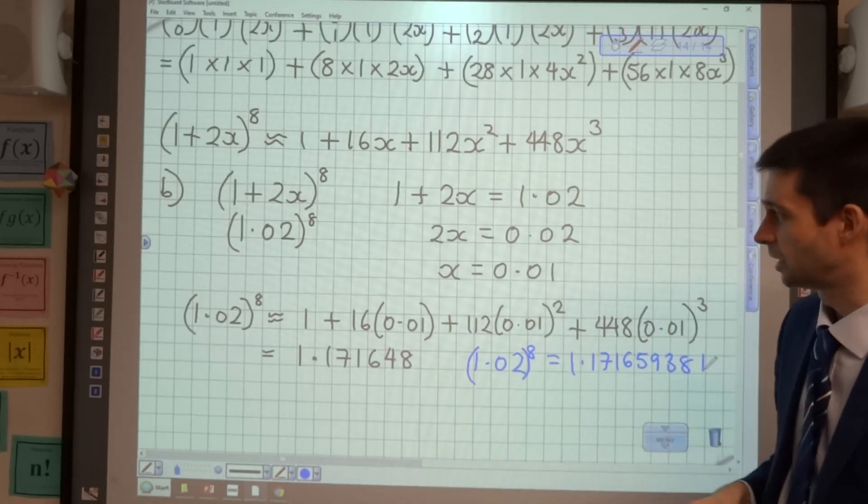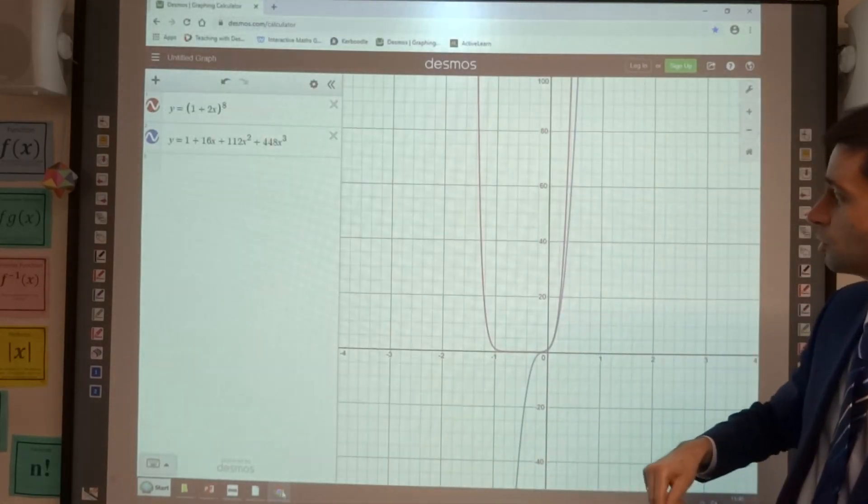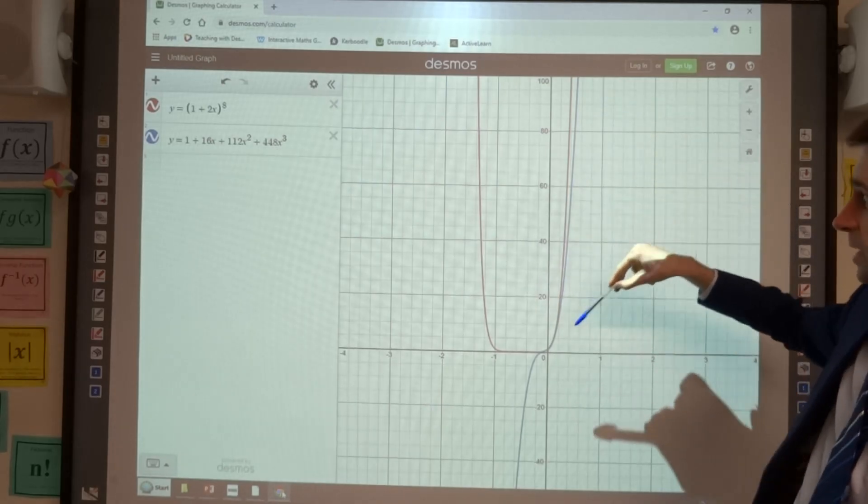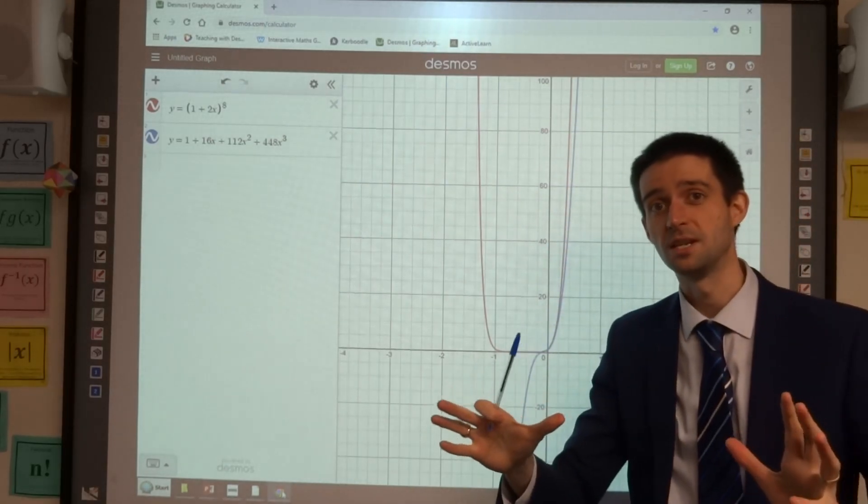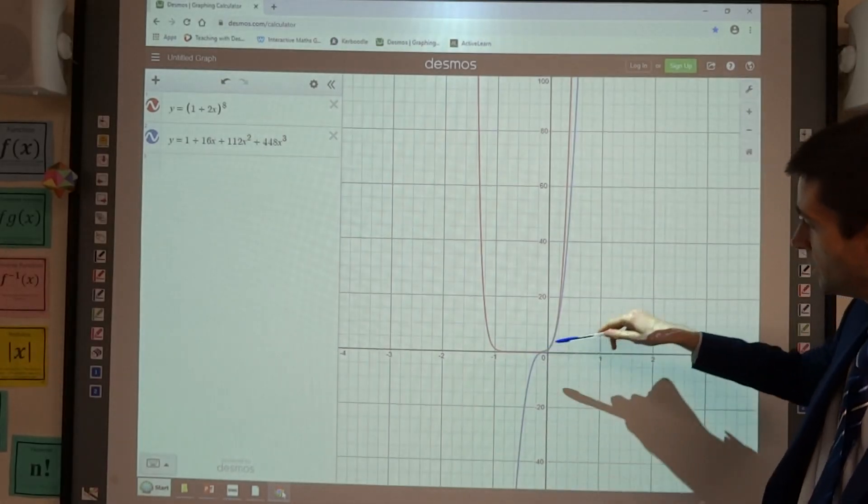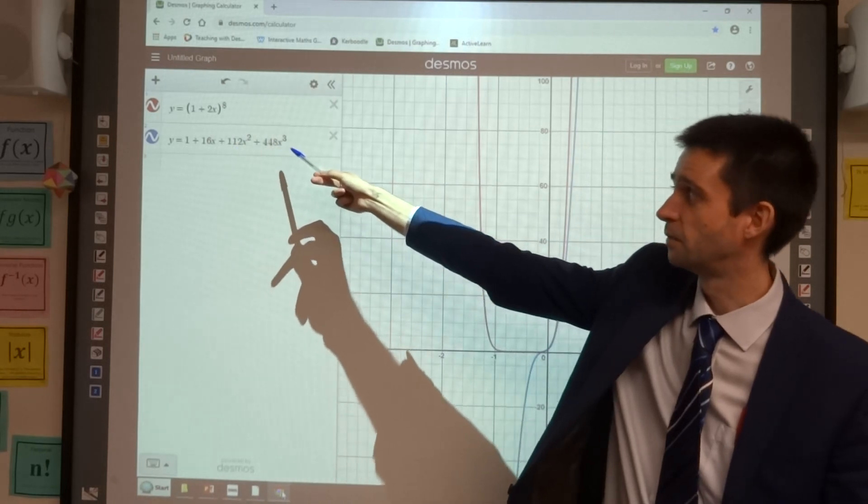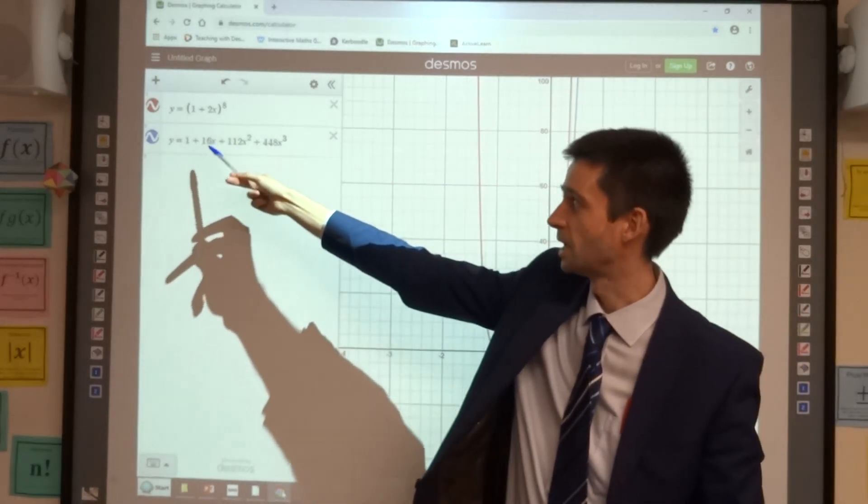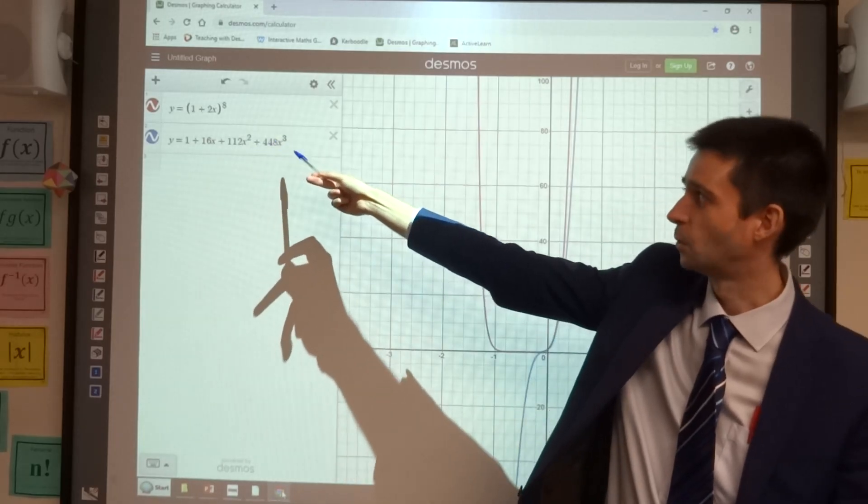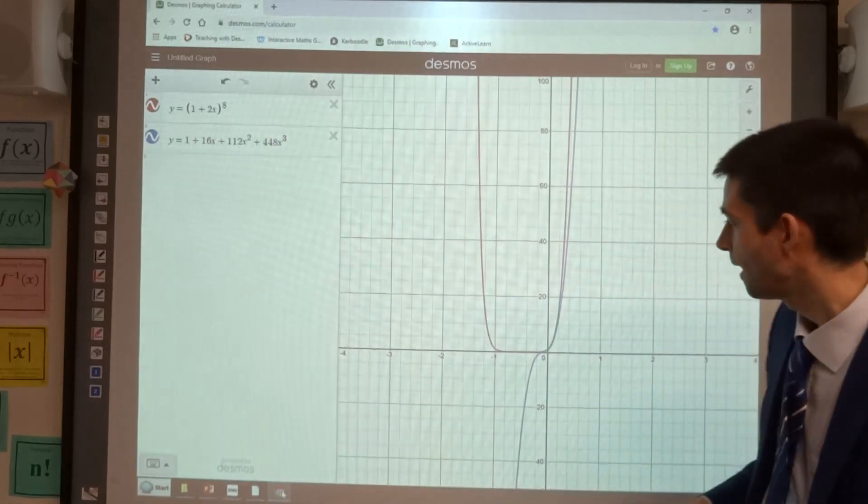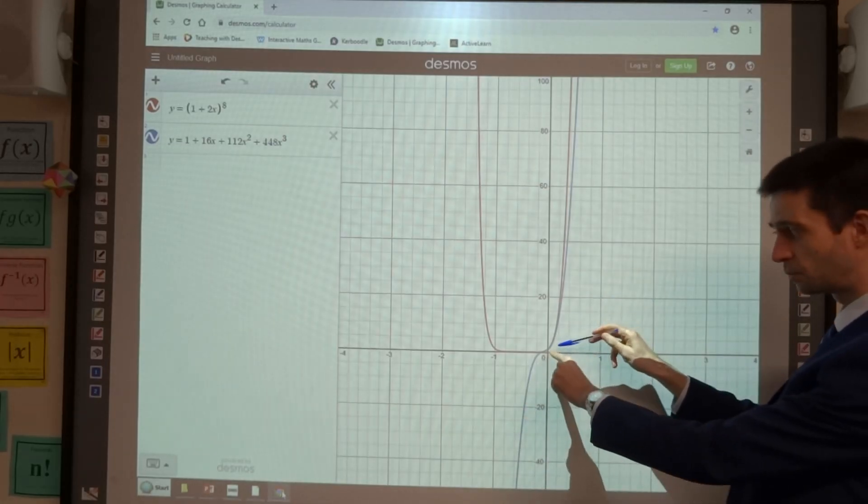What I've actually done is I've cracked out Desmos and I've got Desmos to draw in red the graph of (1+2x)^8. So that is the full graph, all the terms of the expansion. And in blue, what I have here is the expansion that we have so far, the first four terms. 1 + 16x + 112x^2 + 448x^3.